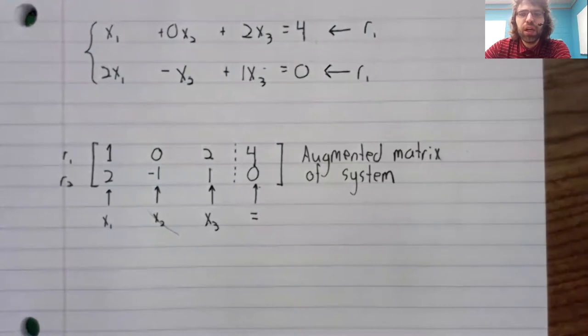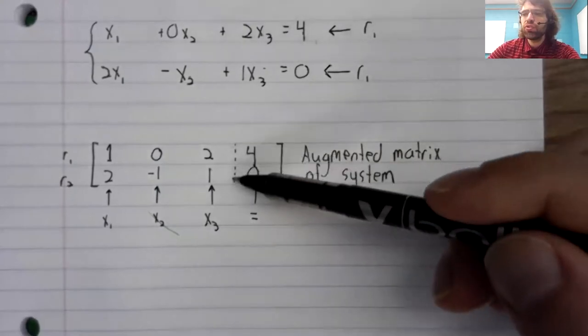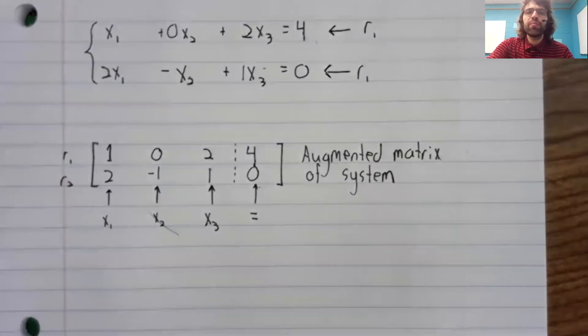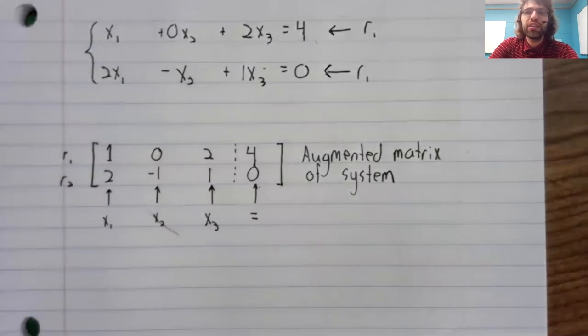So what you frequently see is authors put a dotted vertical line to separate off this last column from the rest. Our textbook, David Lay, does not do that. So I don't do it either. I want my notes and videos to match up with the textbook. But if you're looking for help somewhere and you do see a dotted line like this, that's what it means. It's just to make this thing a little easier to read.